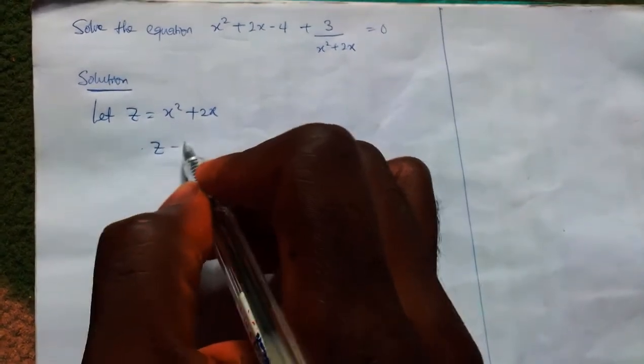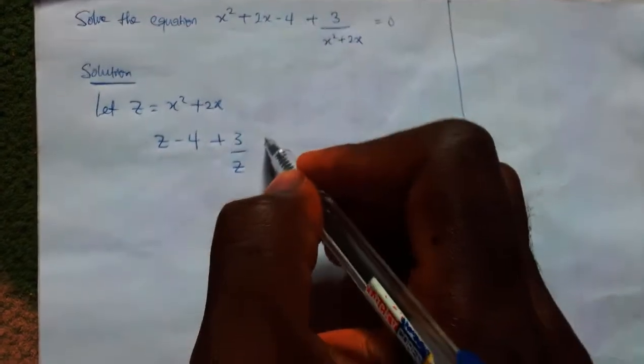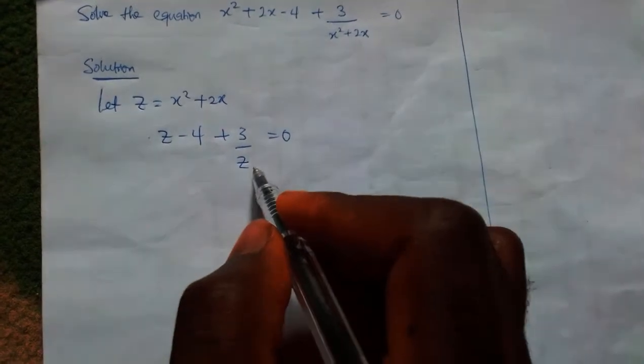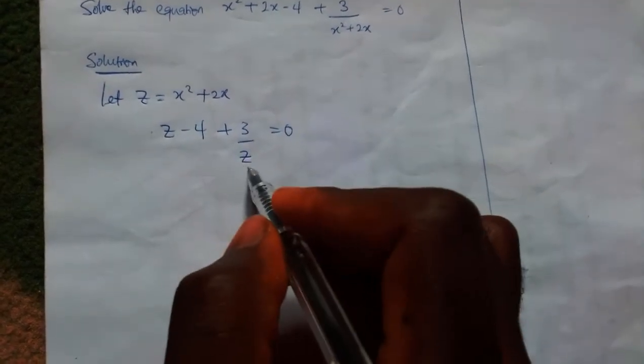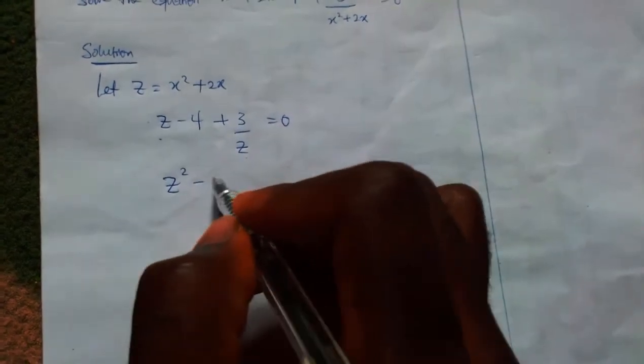In this case, let me cross multiply to cancel. Multiply all three by z which is the common denominator, so that becomes z squared minus 4z plus 3 equals zero.